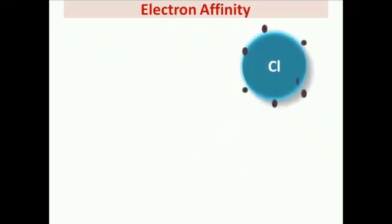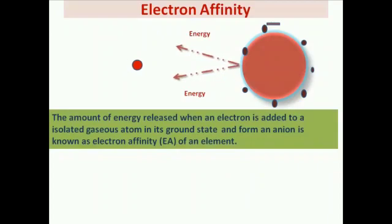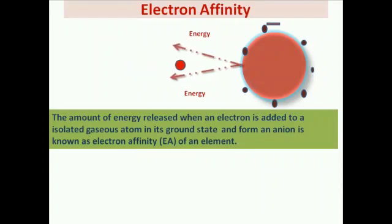The next periodic property is Electron Affinity. When an electron is added to an isolated gaseous atom in its ground state, there is a release of energy. The amount of energy released when an electron is added to an isolated gaseous atom in its ground state to form an anion is known as the electron affinity of an element.